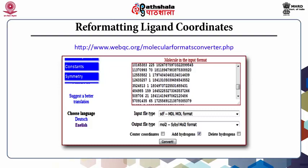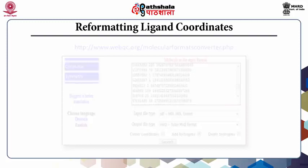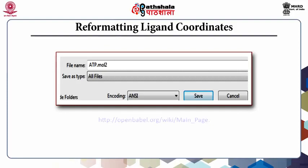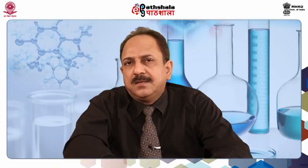To convert atp.sdf to atp.mol2, visit the WebQC molecular formats converter page. Open the atp.sdf file with Notepad and copy all contents to the clipboard. Paste into the text box at the WebQC molecular formats converter page. Select input format as SDF/MDL mol format and output file type as mol2 SYBYL mol2 format. Check the 'add hydrogens' checkbox and click the Convert button. Copy the mol2 output and paste into Notepad, saving with file name atp.mol2 with file type set to All Files. Alternatively, Babel is another option for interconverting formats.